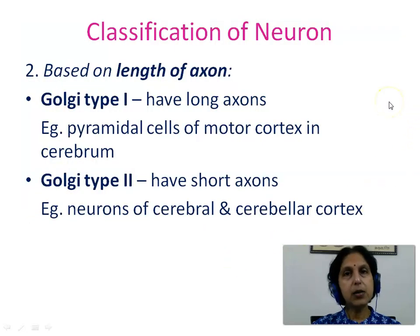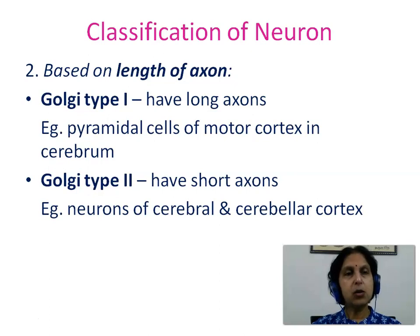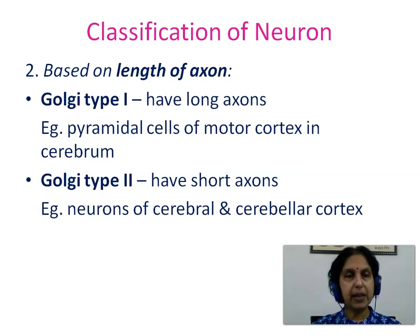Neurons can also be classified based on the length of the axon into two types. Golgi type 1 neurons have long axons — examples being the pyramidal cells of the motor cortex in the cerebrum. Golgi type 2 neurons have short axons — examples being neurons of the cerebral and cerebellar cortex.